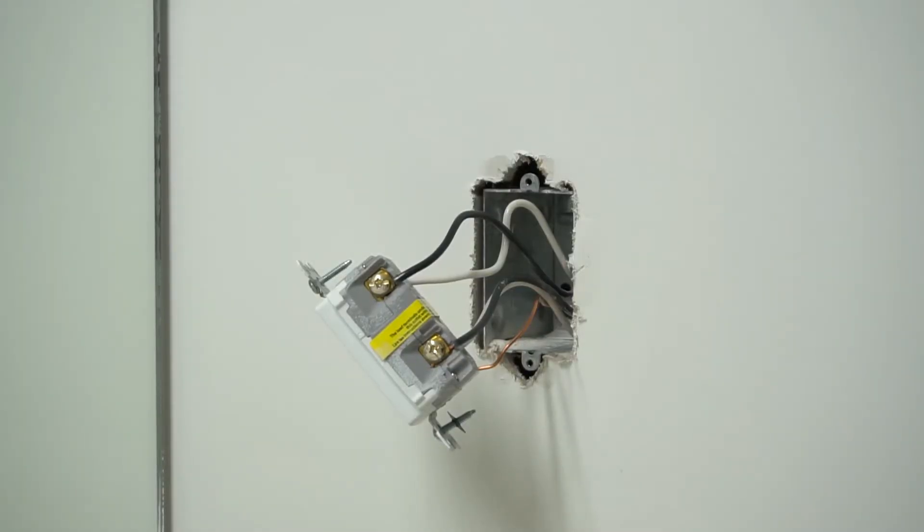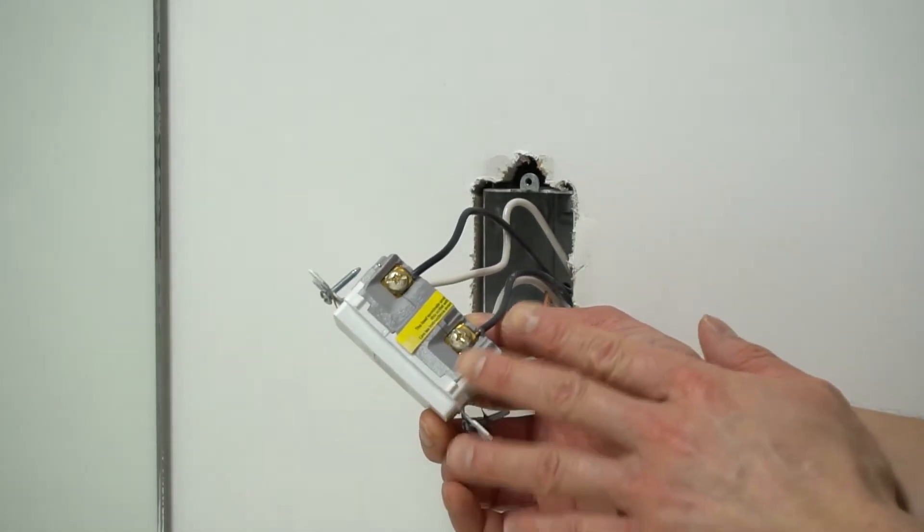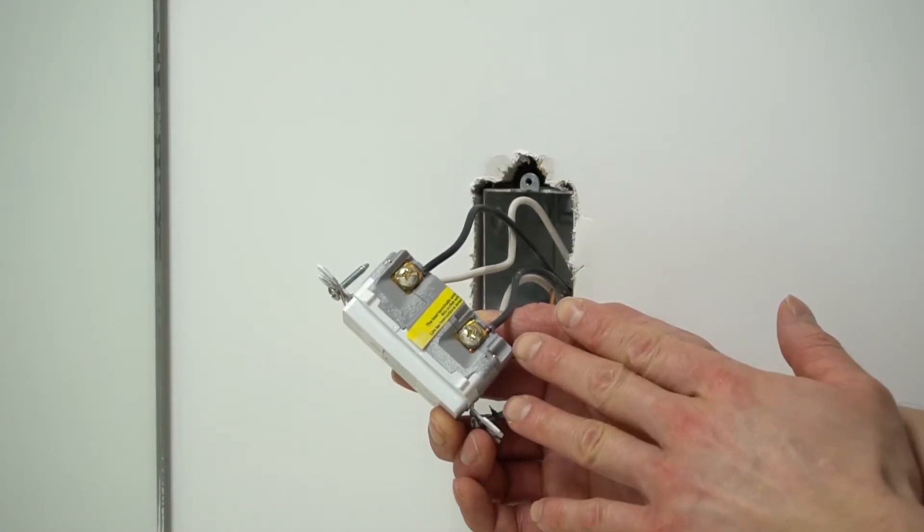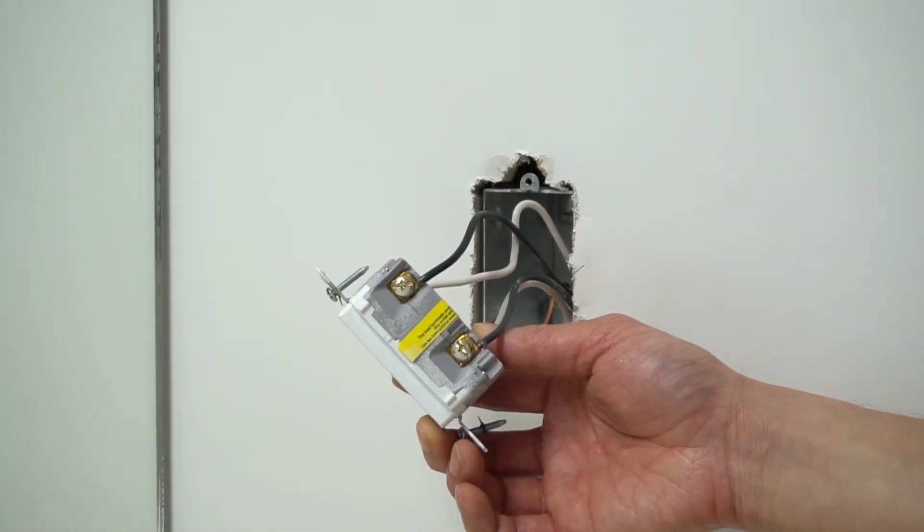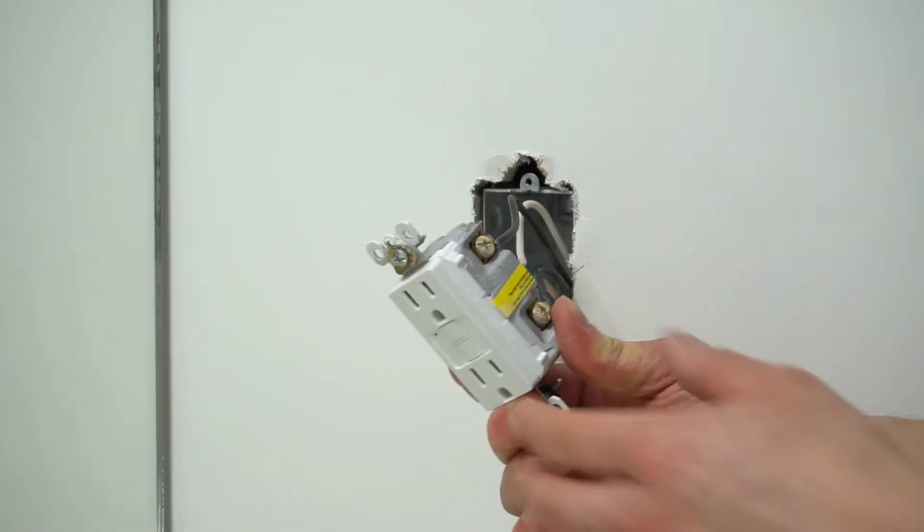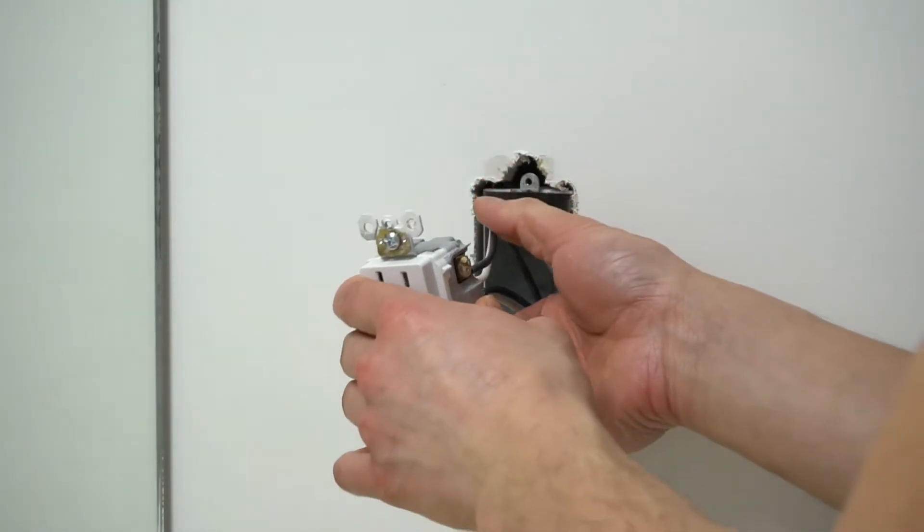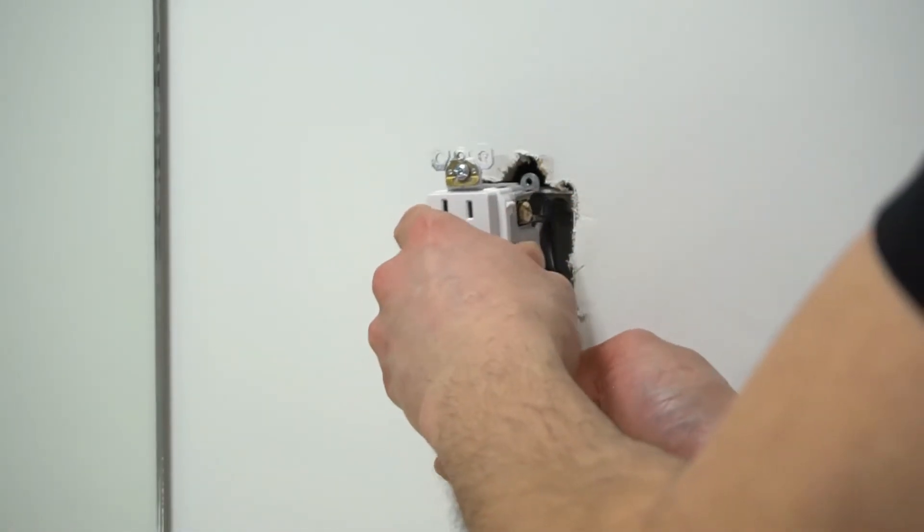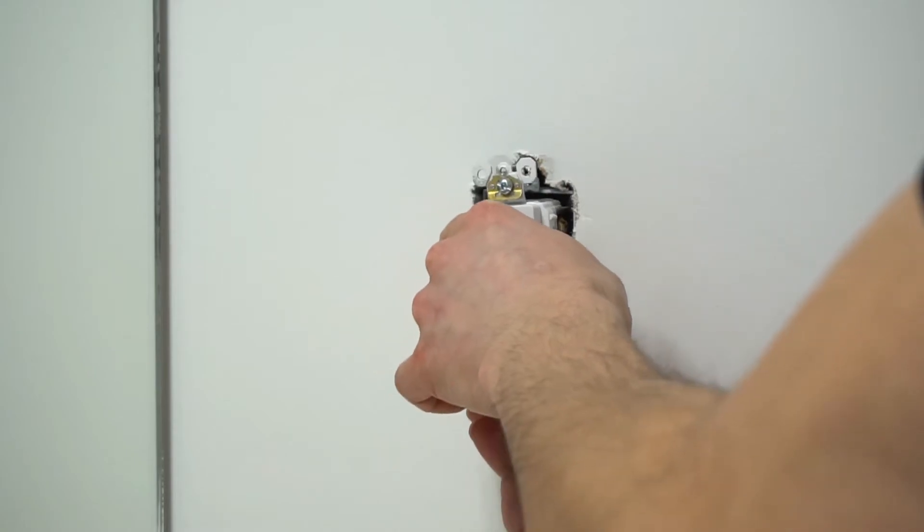If the wires are installed and stripped properly, you should see no visible copper past the back of the plug. Now we are ready to insert the plug back into the wall and tighten the screws.